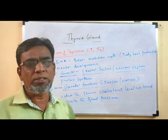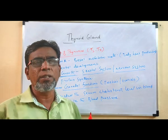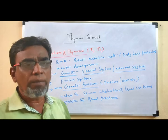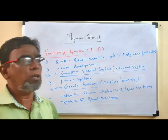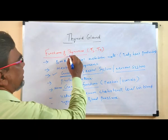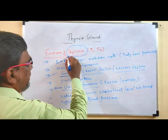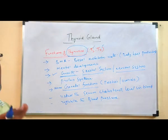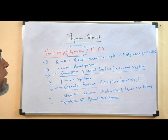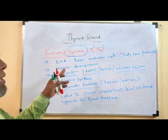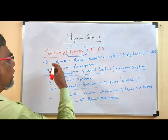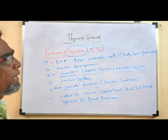So far we have discussed the structure, location, function, and significance of the thyroid gland. Now we will discuss the functions of thyroxine. Thyroxine is a hormone secreted by the thyroid gland, especially T3 and T4. T3 is called triiodothyronine, and T4 is called tetraiodothyronine — especially called thyroxine. Thyroxine is very important to maintain BMR — the basal metabolic rate.